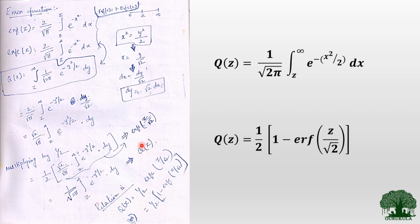From this we can relate Q(z) to erfc, and therefore represent Q(z) in terms of the error function as well. The error function and complementary error function are related by: erf(z) = 1 − erfc(z). So we have the freedom to represent the Q function in terms of either erf or erfc. That concludes the proof for how this particular expression is obtained.